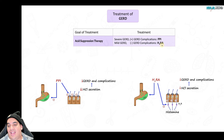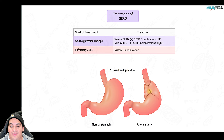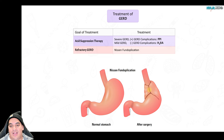If patients can't step down, go back to the lowest controlling PPI dose. If on an H2RA they develop worsening GERD, up-titrate to a PPI. If on maximum PPI they're still not improving, consider a Nissen fundoplication — taking the fundus and wrapping it around the lower esophageal sphincter to reinforce and tighten it, reducing hydrochloric acid leaking back up into the esophagus.